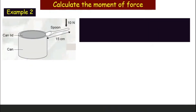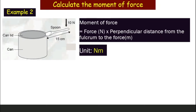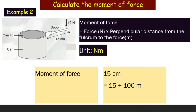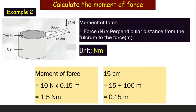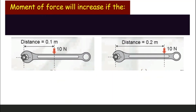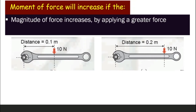Let's look at one more example — finding the moment of force when you use a spoon to open a can lid. Before calculating, convert 15 centimeters to meters: 15 ÷ 100 = 0.15 meters. Now with force in newtons and distance in meters, we calculate: 10 newtons × 0.15 meters = 1.5 N·m.